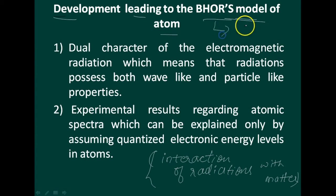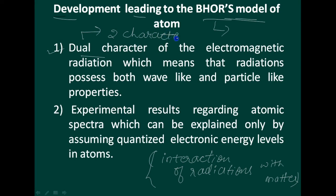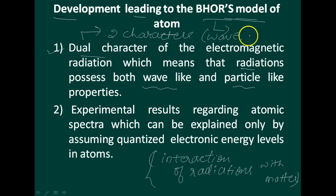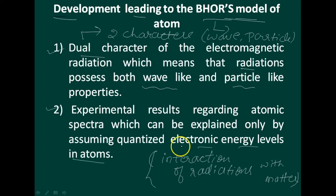Bohr's model is an improvement of the Rutherford model. The first point he explained is dual character - which means electromagnetic radiation exhibits two characters: wave-like properties and particle-like properties. The second point is experimental results regarding atomic spectra, which can be explained only by assuming quantized electronic energy levels in atoms.